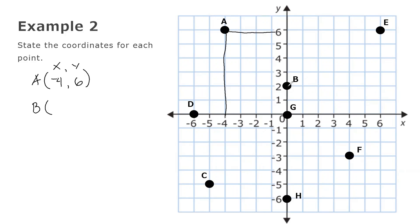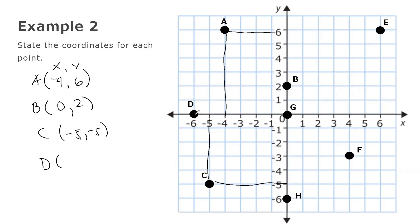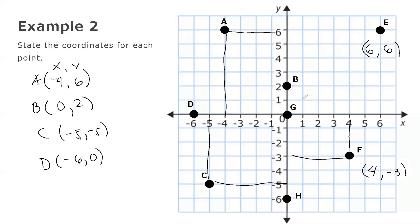For point B, x is 0 and y is negative 5, giving coordinates (0, negative 5). Point C has x = negative 6 and y = 0. Point E has coordinates where x and y are both 6, giving (6, 6). For point F, x is 4 and y is negative 3. Finally, point G has x = 0 and y = 0, which is the origin.